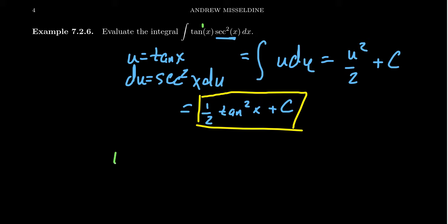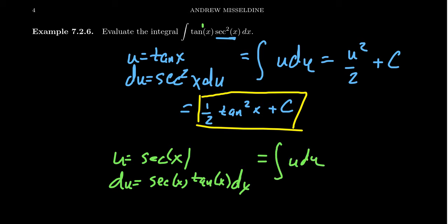Where we take u to be secant x, and then we'll take du to be secant x tangent x dx. In that situation, notice that the tangent secant becomes a du, and then the other secant becomes a u. You end up with u du, the exact same integral from before, so its anti-derivative will be the same, u squared over 2 plus a constant.